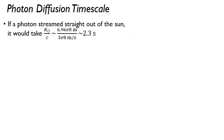So if our photon streamed straight out of the Sun, the time that it would take for the photon to leave the Sun would just be given by the radius divided by the speed of light. So it would just be a couple seconds for that photon to come out.